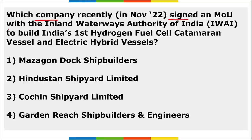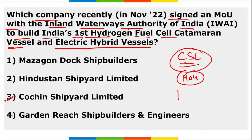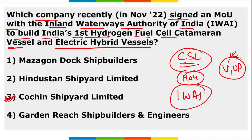Which company recently signed an MOU with the Inland Waterways Authority of India to build India's first hydrogen fuel cell catamaran vessel and electric hybrid vessel? It is CSL — Cochin Shipyard Limited. CSL signed an MOU with the Inland Waterways Authority of India to build India's first hydrogen fuel cell catamaran vessel for Varanasi, Uttar Pradesh. CSL also signed an MOU to construct an electric caravan vessel from Uttar Pradesh to Assam.